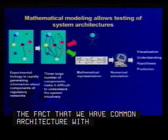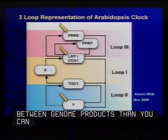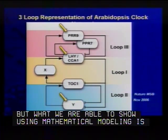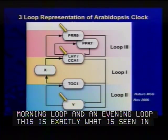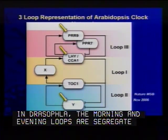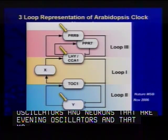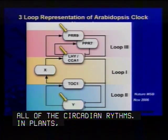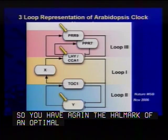Our lab has used a lot of mathematical modeling because you use genome-wide approaches and get more associations between annotated genome products than you can intuitively put together. Published in Nature Molecular Systems Biology, using mathematical modeling we were able to show that the plant clock can actually be grouped essentially into a morning loop and an evening loop — exactly what is seen in Drosophila. But in Drosophila, the morning and evening loops are segregated into different cell types in the brain — lateral neurons that are morning oscillators and lateral neurons that are evening oscillators — whereas in plants, in every cell you have a morning oscillator and an evening oscillator coupled together. Again, the hallmark of an optimal architecture even though organized using very different genes.